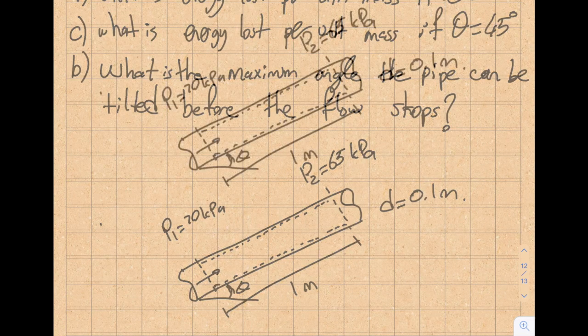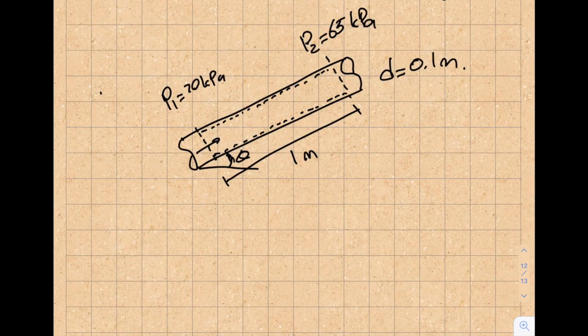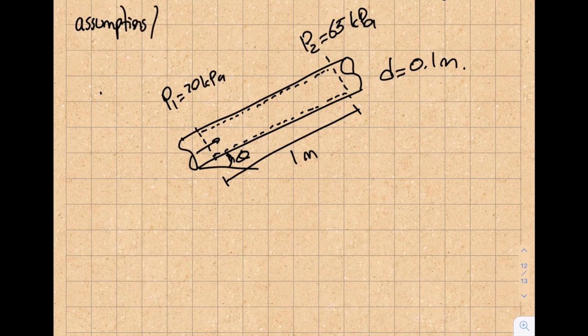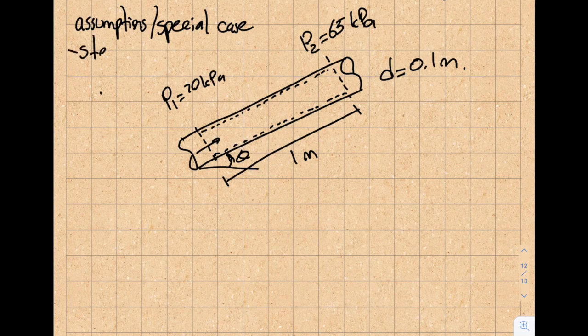So let's start by the traditional method of I draw the control volume over here. And the next step is to write the assumptions. So let's go ahead and write the assumptions or special cases. Is this steady? Yes, it is. I don't see any time variance in the question statement.